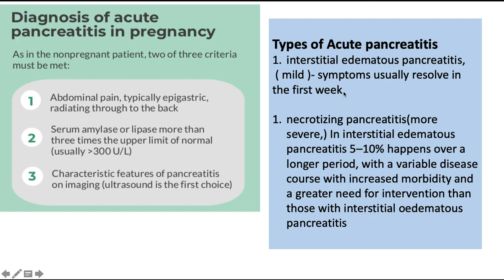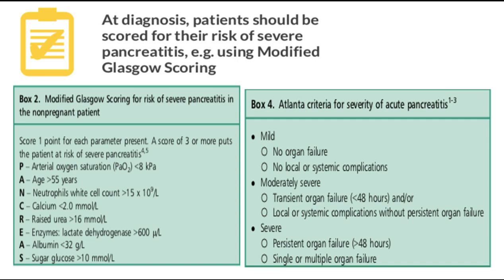There are two types of acute pancreatitis. The first is interstitial edematous pancreatitis, which is mild and symptoms usually resolve in the first week. The second type is necrotizing pancreatitis, which is more severe. Necrotizing pancreatitis occurs in 5 to 10% of cases, progresses over a longer period with a variable disease course, with increased morbidity and greater need for intervention compared to interstitial edematous pancreatitis.